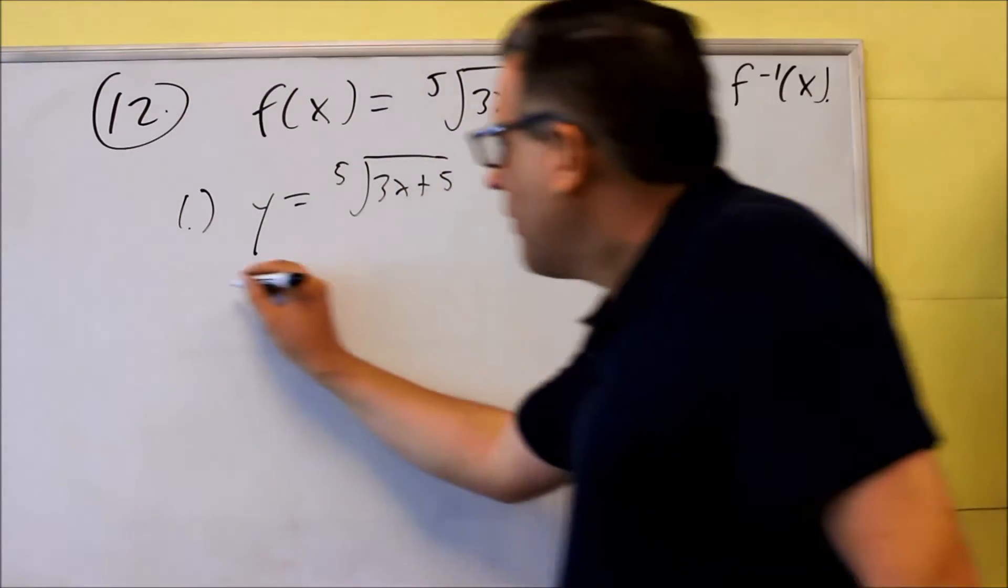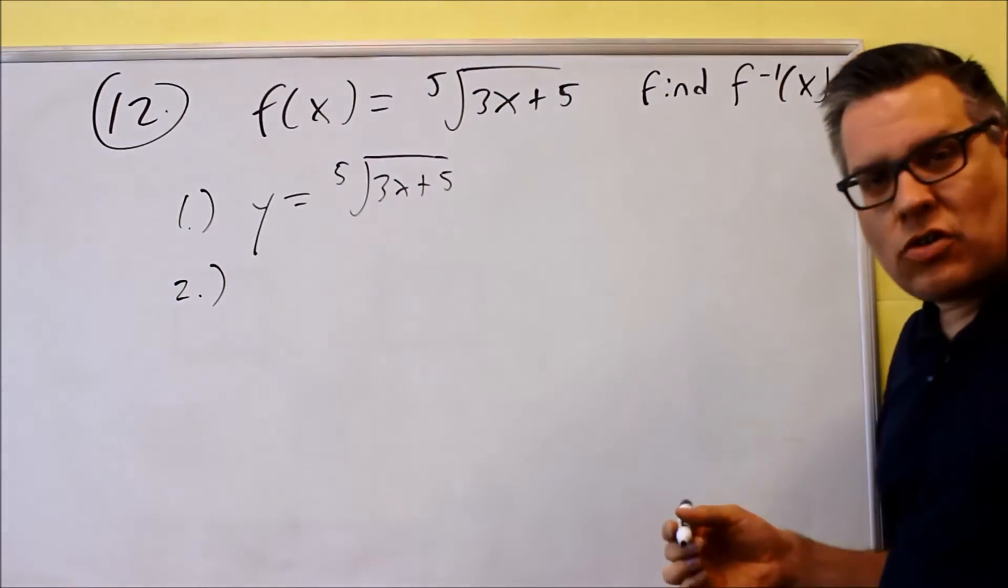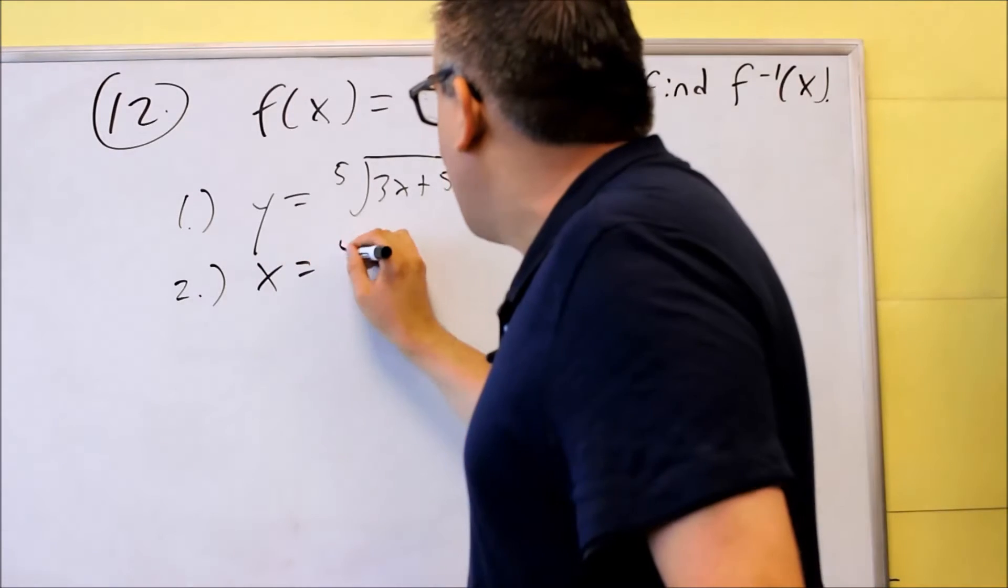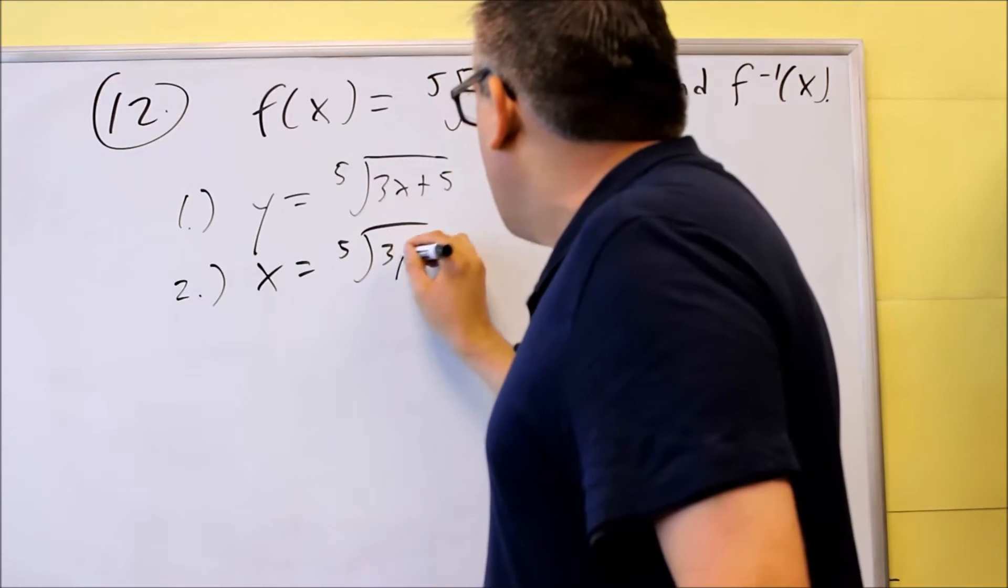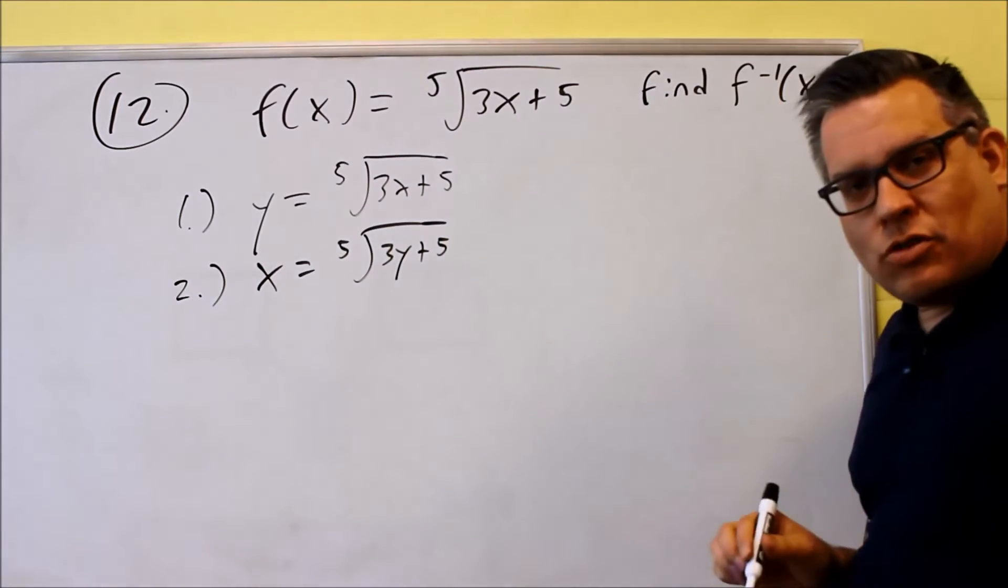Step number two is we're going to switch the x and the y. Whenever we want to find the inverse, the x and the y are always switched. So x equals fifth root of 3y plus 5, that's the end of step two.